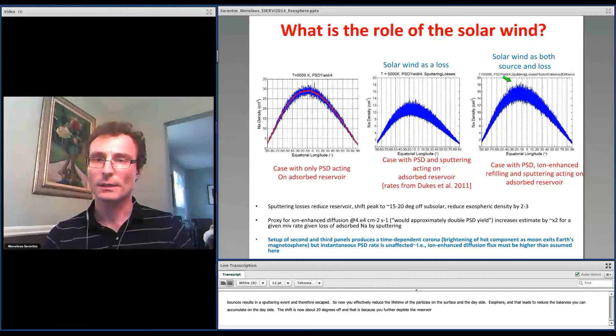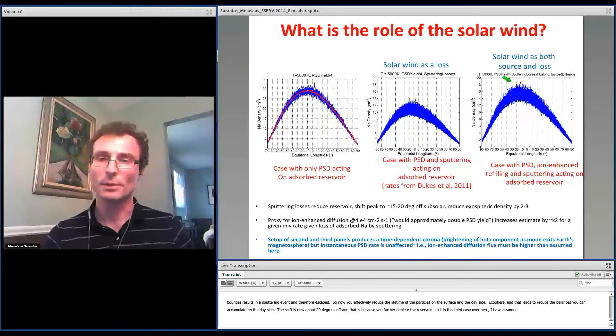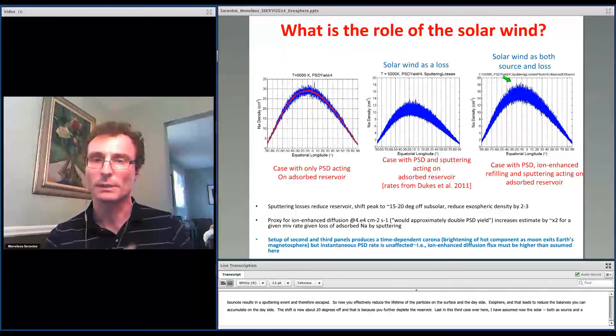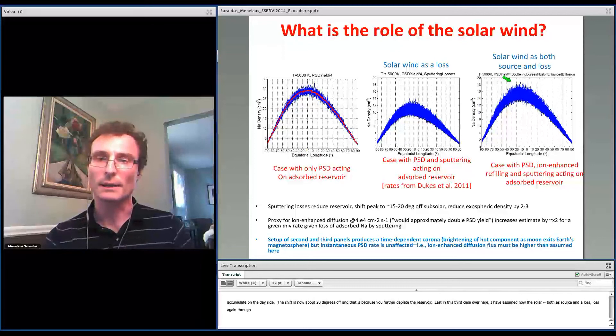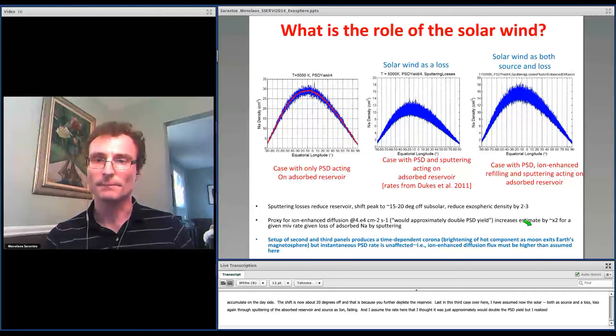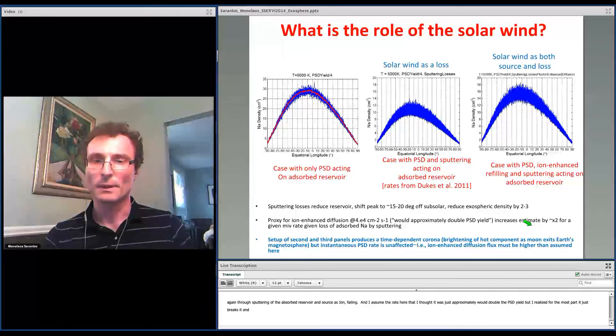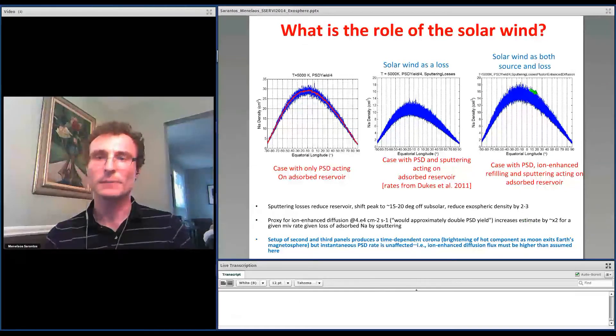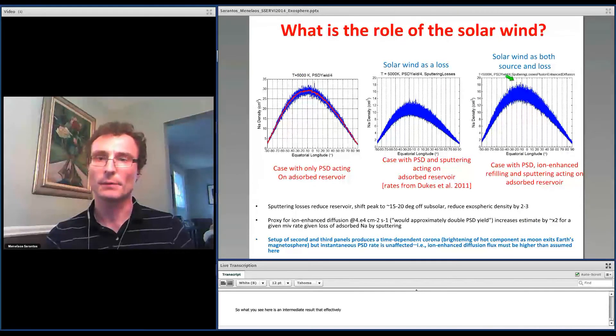Last, in this third case over here, I've assumed now the solar wind to act both as a source and as a loss—loss again through sputtering of the adsorbed reservoir, and source as ionic sputtering. And I assumed the rate here that I thought it would just approximately double the PSD yield, but I realized that for the most part it just breaks even with the sputtering. So what you see here is an intermediate result. Effectively, this is without sputtering, this is with sputtering but also some ion-enhanced diffusion.